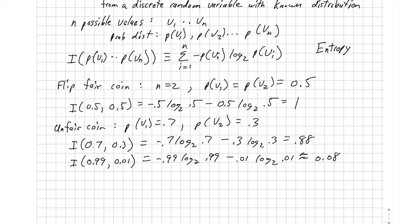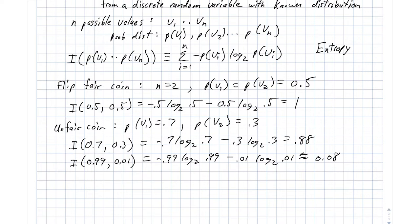Bringing this back to decision trees and leaf nodes: we talked about the idea that a leaf node should be very pure — it should have either all positives or all negatives in a binary classification problem. That corresponds to this extreme case where we have a very large imbalance in positives versus negatives. So we're striving for a tree that has very low information in the leaves, and we want to stay away from leaves with very high information content.